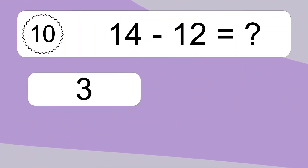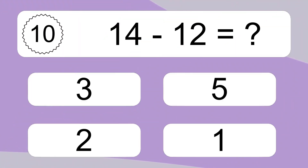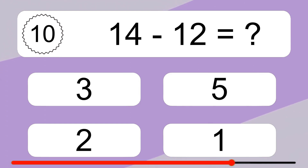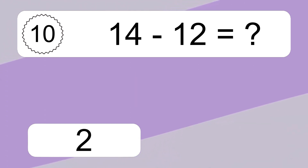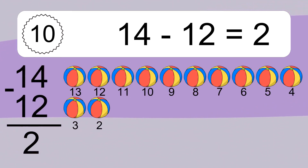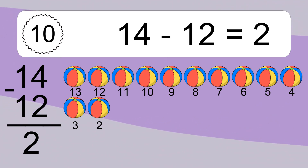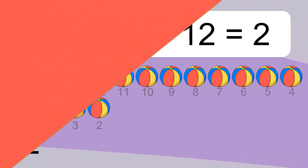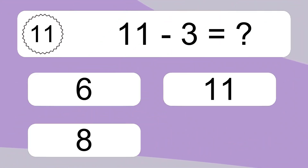14 minus 12 equals what? 14 minus 12 equals 2. Let's count it. 13, 12, 11, 10, 9, 8, 7, 6, 5, 4, 3, 2. 11 minus 3 equals what?